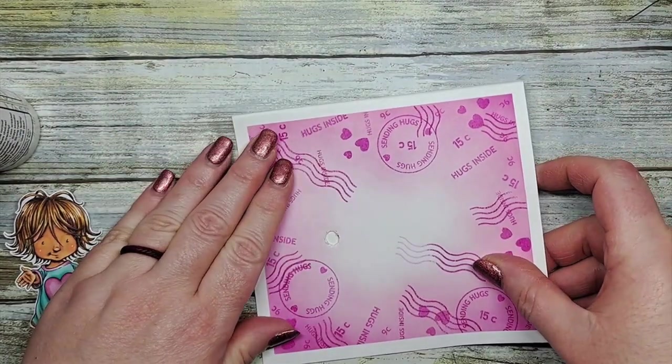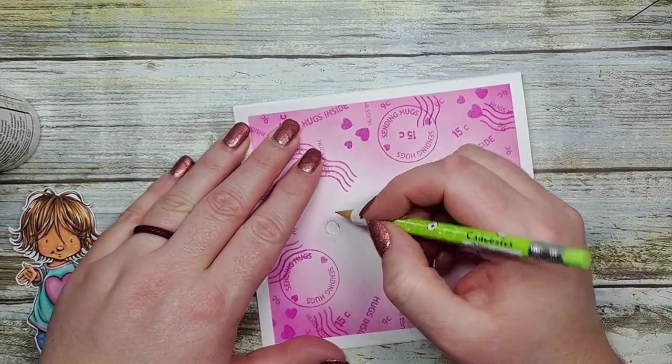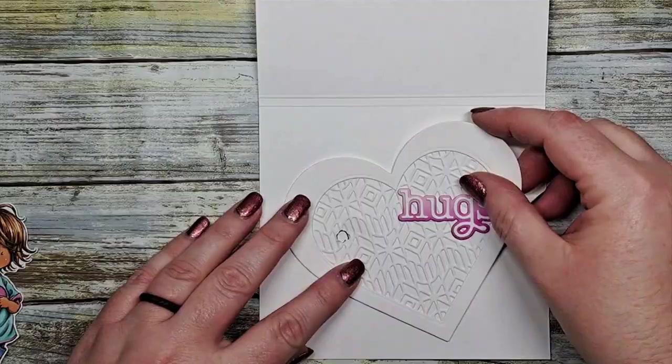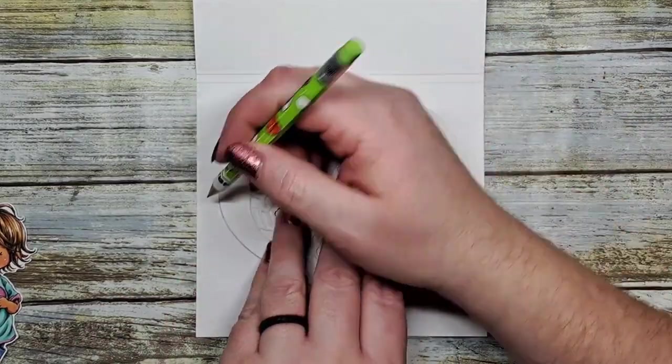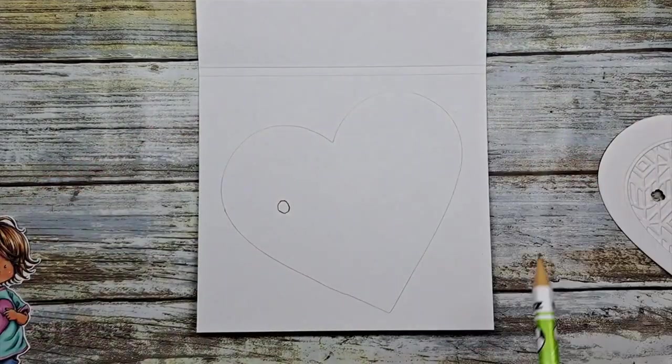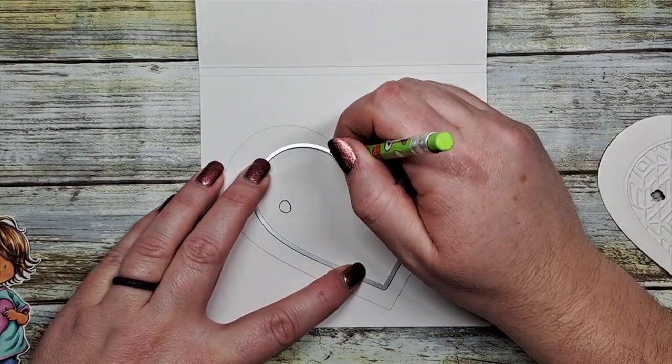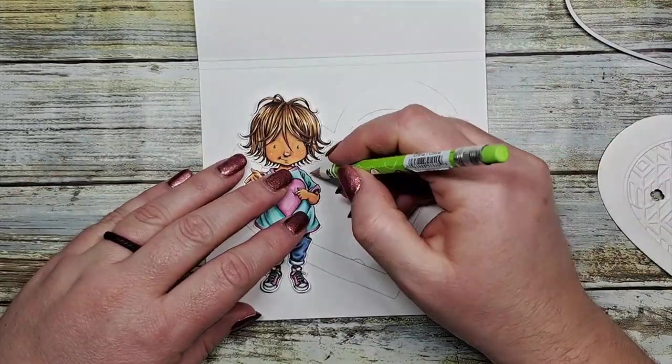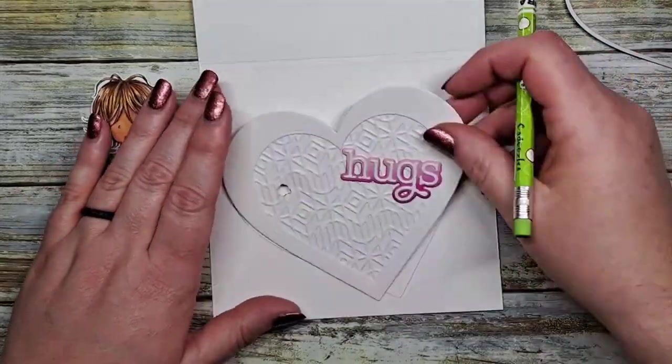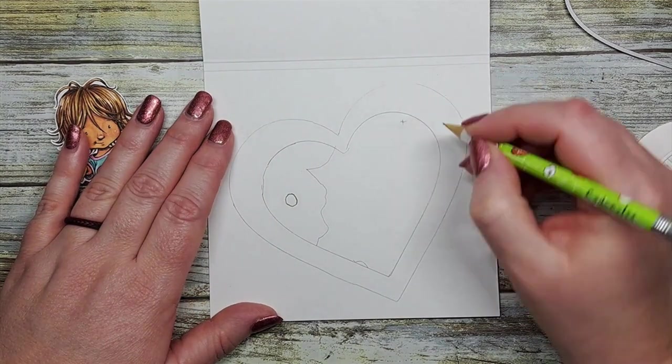We're going to fold over our circuit card and we're going to then trace the hole right through to the inside where we're going to make our circuit platform. I'm going to trace that heart just so that I know where I'm going to add my lights because I'm going to add my lights in the embossed area of the heart.